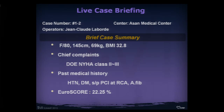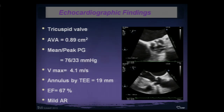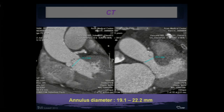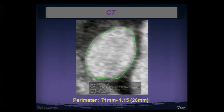Baseline echocardiographic findings: valve area 0.89 cm², tricuspid valve, mean pressure gradient 33 mmHg, Vmax 4.1 m/s. Baseline TEE measurement: annulus 19 mm, normal ejection fraction. CT confirms right-sided annulus diameter of exactly 19 mm and left-sided coronal view of 22.2 mm — the maximal size. Perimeter-derived annulus is 71 mm, which is more than 15 percent overstretching of the planned valve.